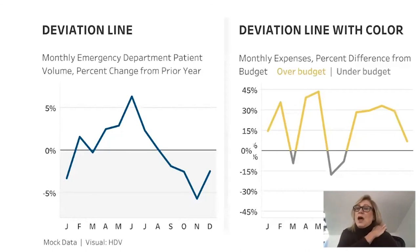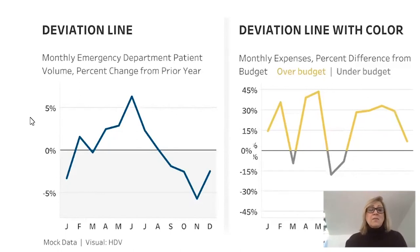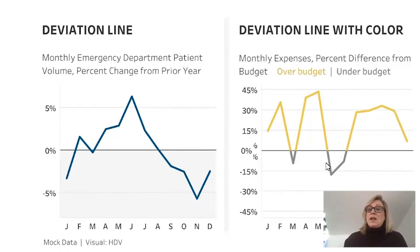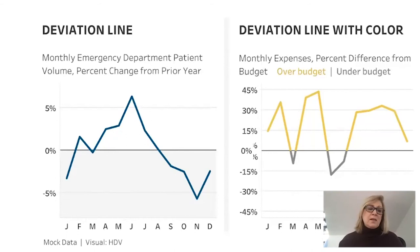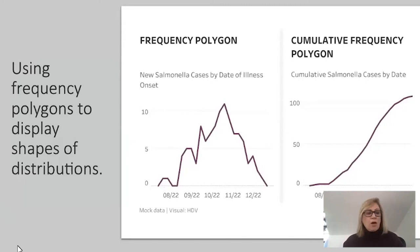A deviation line graph can be used instead of a deviation bar. For example, to see how emergency department patient volume changed year over year — you just need to know if you're up or down. If you want to see whether you're over or under budget, you can use a line with the Gestalt principle of continuity — even though the color changes at zero, we still see it as the same line. A frequency polygon can show Salmonella cases by date of illness or cumulative cases — all with a line.